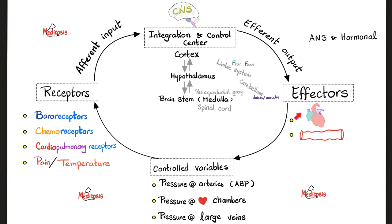The central nervous system processes these sensations and then sends responses — efferent outputs — to effector organs in the cardiovascular system, in the heart and the vessels. To achieve what exactly? To control the blood pressure in the arteries, the pressure in the cardiac chambers, and the pressure in large veins. That's why you need these receptors and reflexes in order to achieve homeostasis.